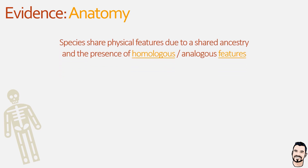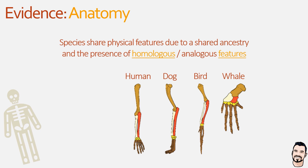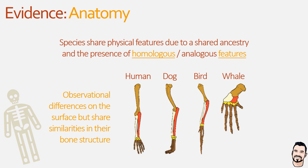As an example of homologous features, we can see the four limbs of four different species — human, dog, bird, and whale — which all look different on the surface and give rise to unique functions: allowing a human to hold items, a dog to walk, a bird to fly, and a whale to swim. However, looking at the underlying bone structure, we find a similar pattern across the different species, suggestive of a common ancestor from which they diverged, allowing each to evolve independently over time.